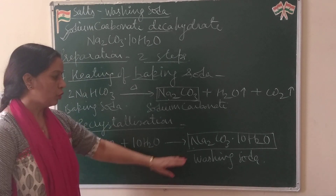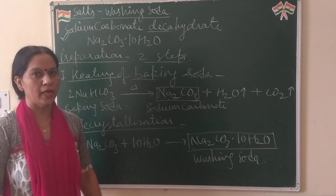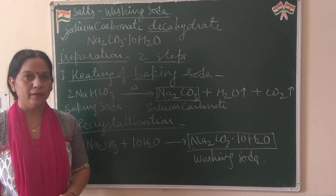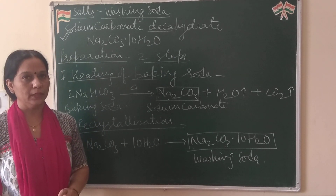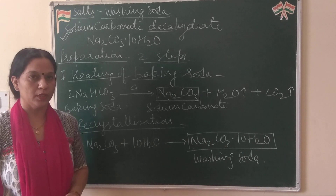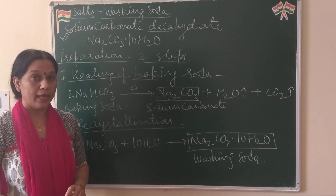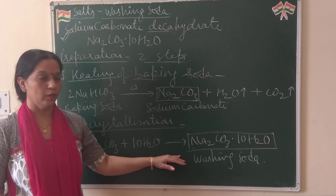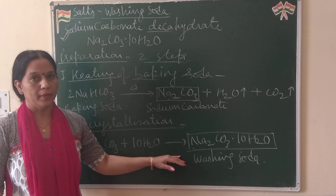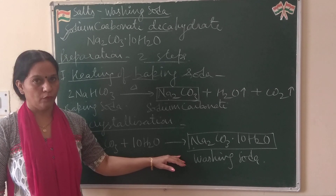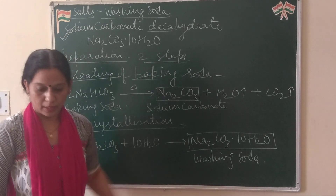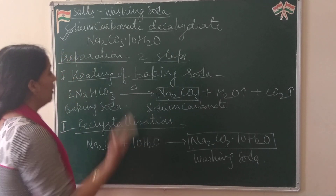What are the uses of washing soda? It is used for cleaning various articles. It is used for the synthesis of borics. Very importantly, it is used to remove the permanent hardness of water. It is also used in the glass industry.